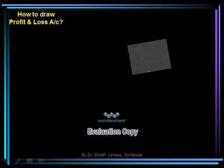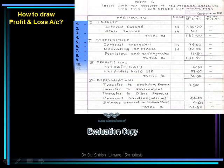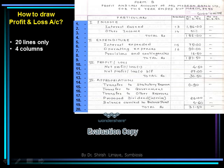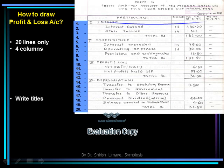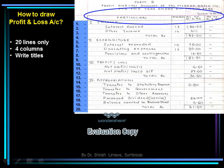To draw the profit and loss account, we will need only 20 lines. We will require four columns — rule them in the manner shown here. Give titles to the columns: Particulars, Schedule Number, Current Year's Figures, and Previous Year's Figures. In an examination problem, previous year figures are not given, so this column is often left blank.